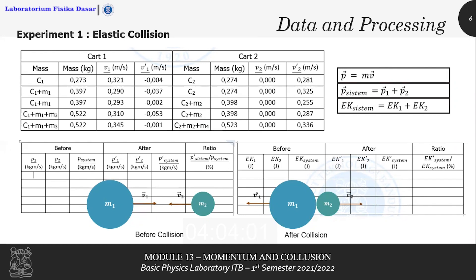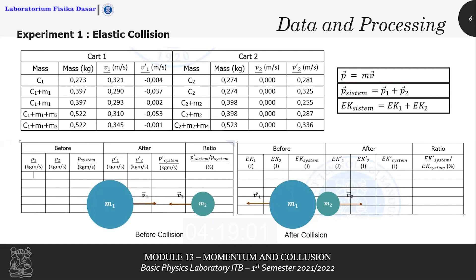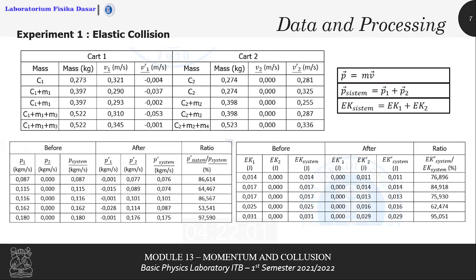After calculating the momentum and kinetic energy of the system, you also need to calculate the ratio by dividing the value of momentum or kinetic energy after the collision by the momentum or kinetic energy before the collision. The results of your calculation will be roughly as shown on the current screen.